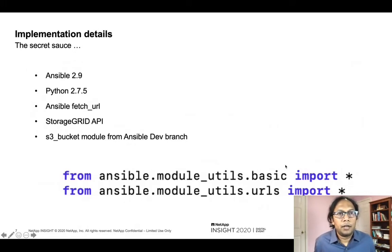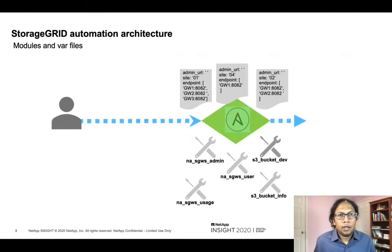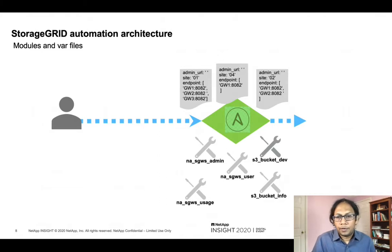Now the interesting part — how? We've developed some modules using Ansible fetch URL for user, group, and policy management and S3 key generation. For bucket create and delete we use the S3 bucket module from the Ansible collections. Here are the four modules that we've developed, and the fifth one as I mentioned is S3 bucket — it's directly from the Ansible 2.9 dev branch. Since Storage Grid supports S3 REST API, you can use any generic module that supports S3.